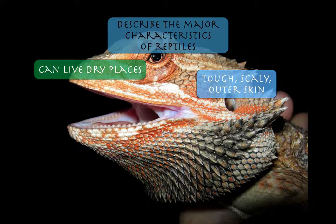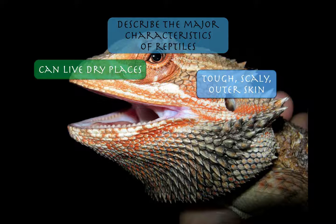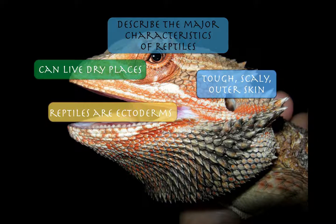Their scaly skin works as a protective measure, but also it helps them maintain the moisture in their body so it doesn't evaporate out — unlike amphibians, which can also respire through their skin. Reptiles are ectotherms, so they don't do very well at controlling their own body temperature.